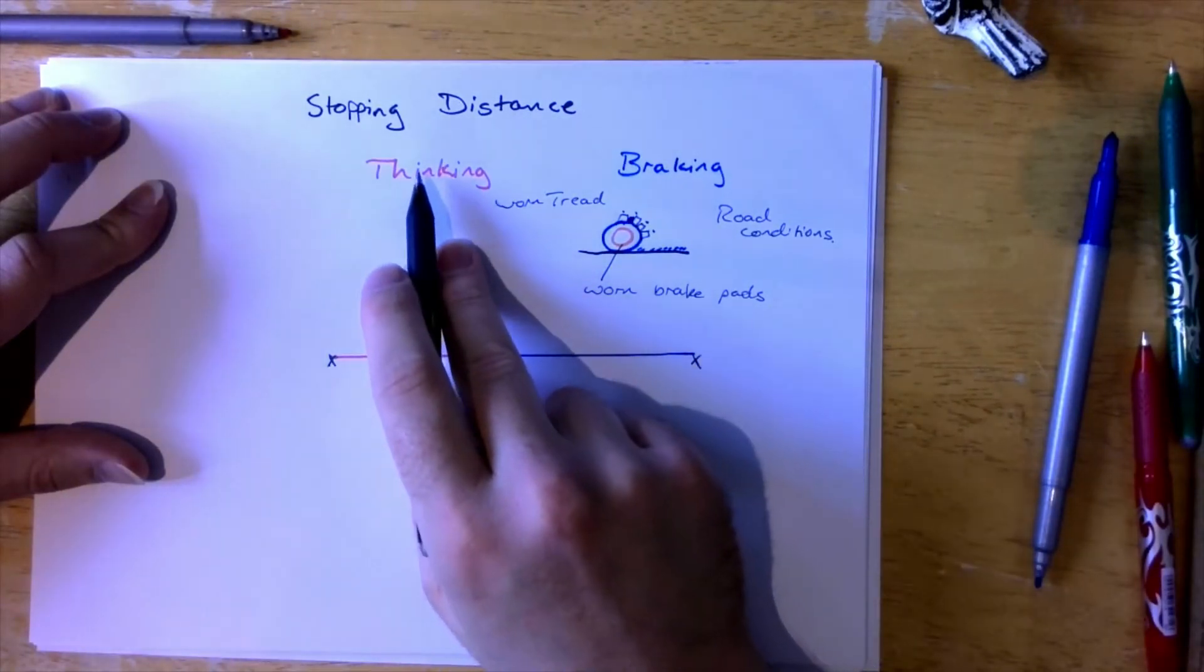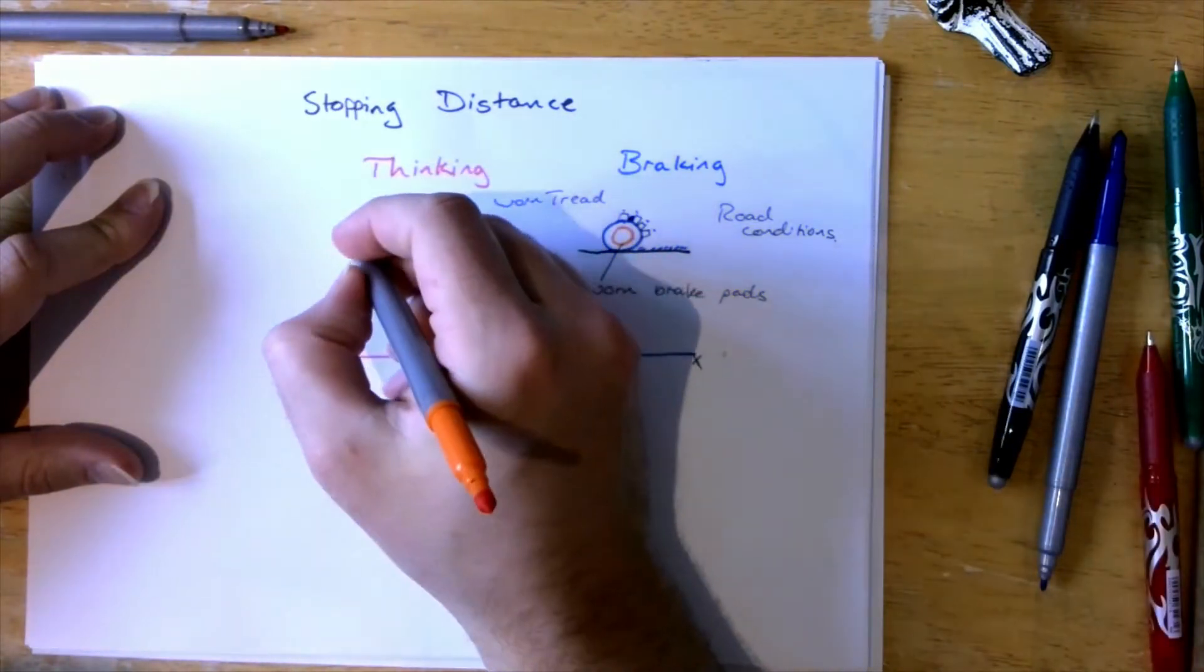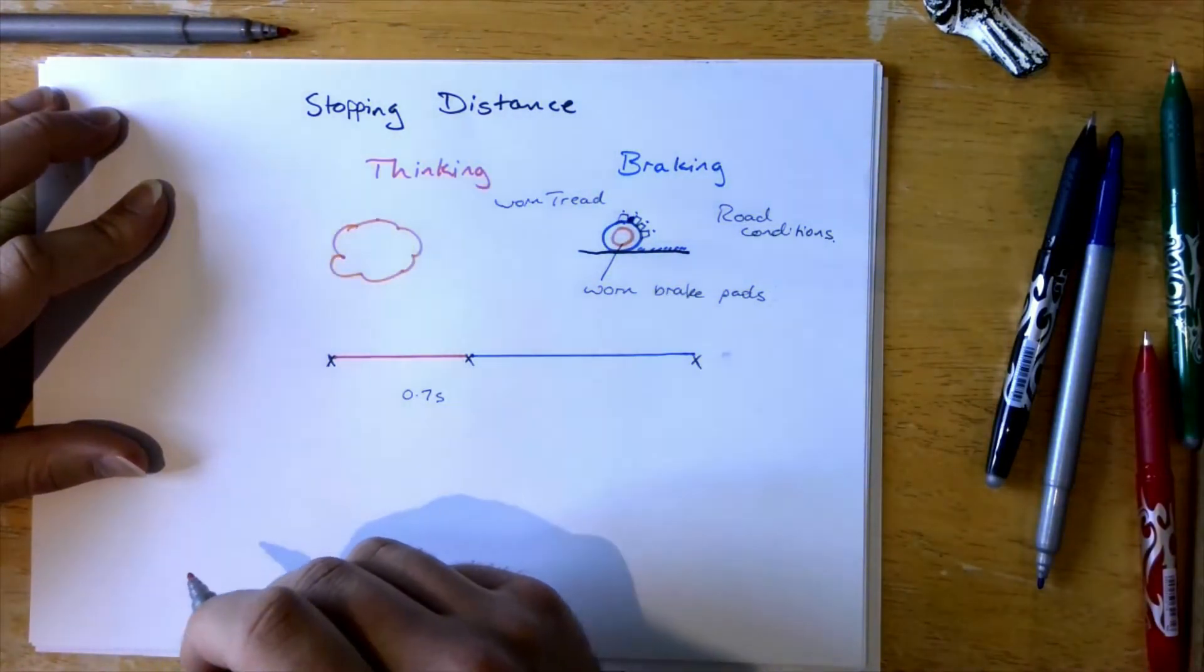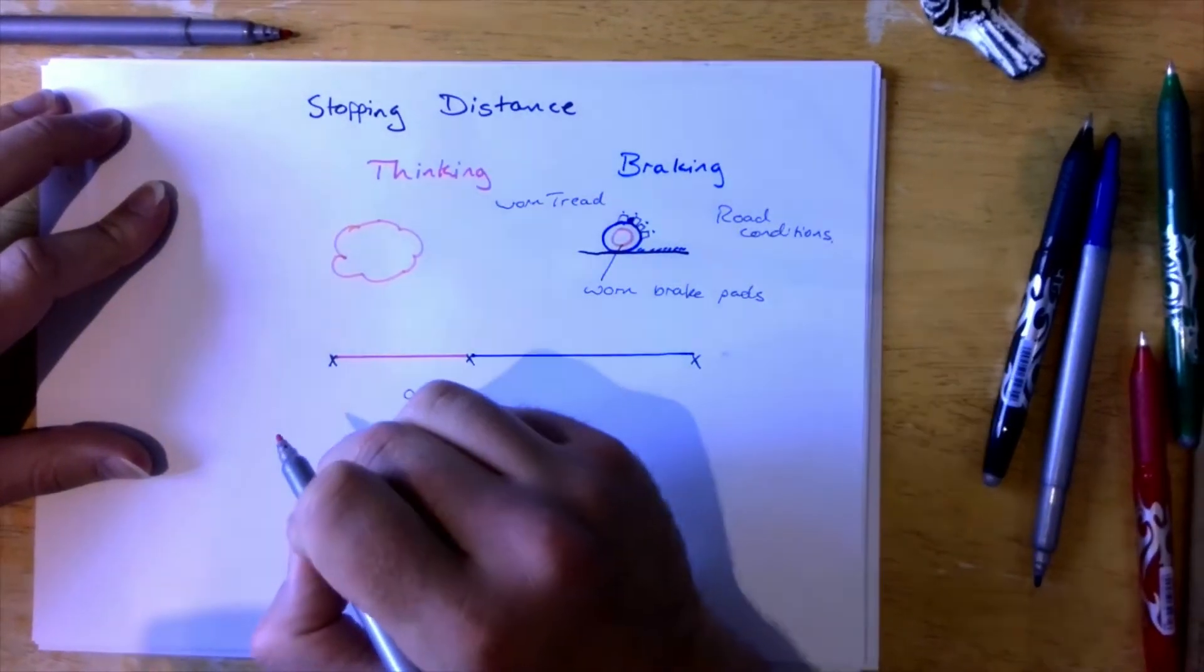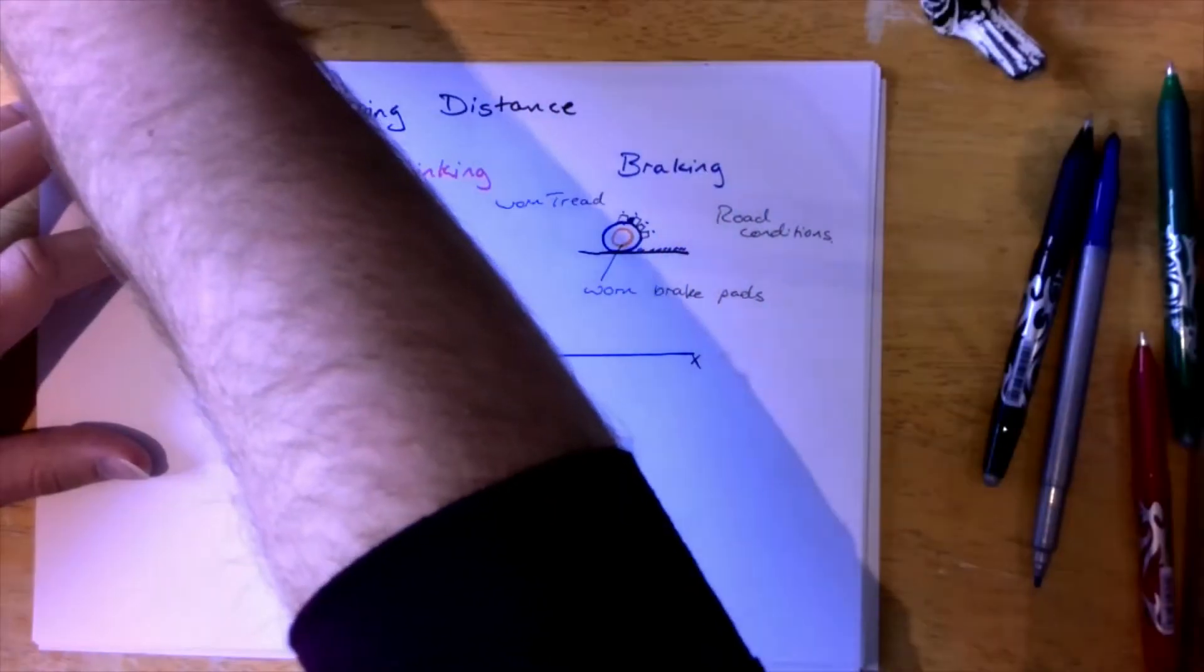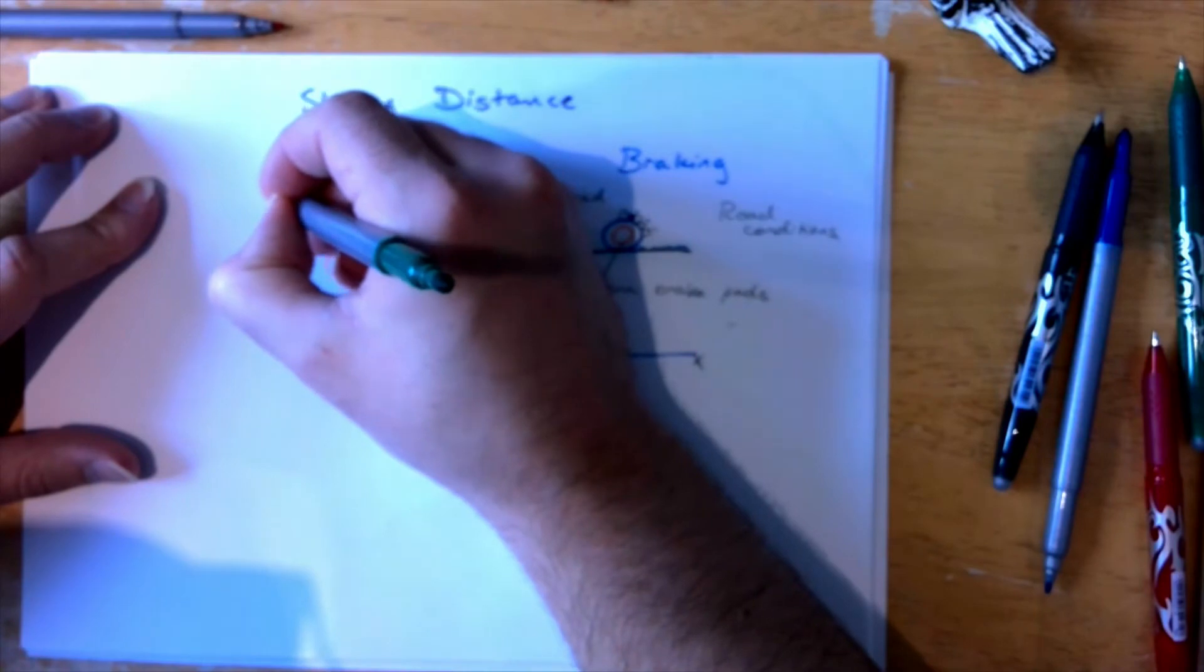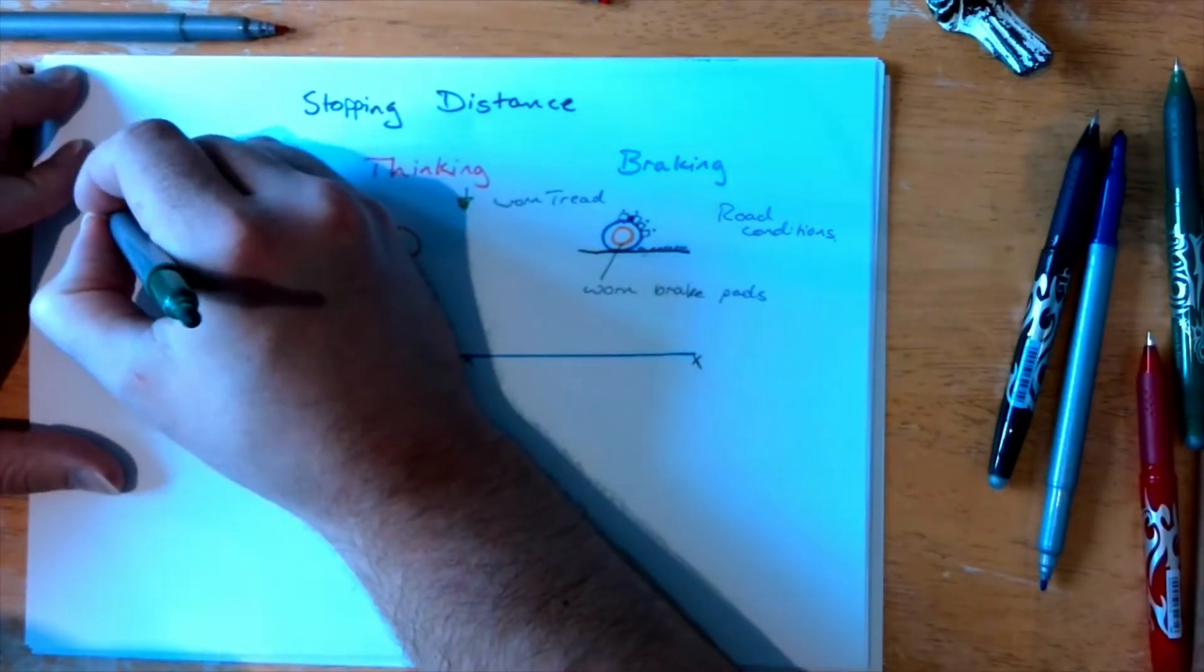The really scary one is the thinking distance because this is all to do with the brain. Okay I'm going to draw a cloud because I can't draw a brain. Anything that affects the brain will affect the thinking distance and we have two different types of things that can affect the thinking distance. We can either increase or decrease the reaction time.